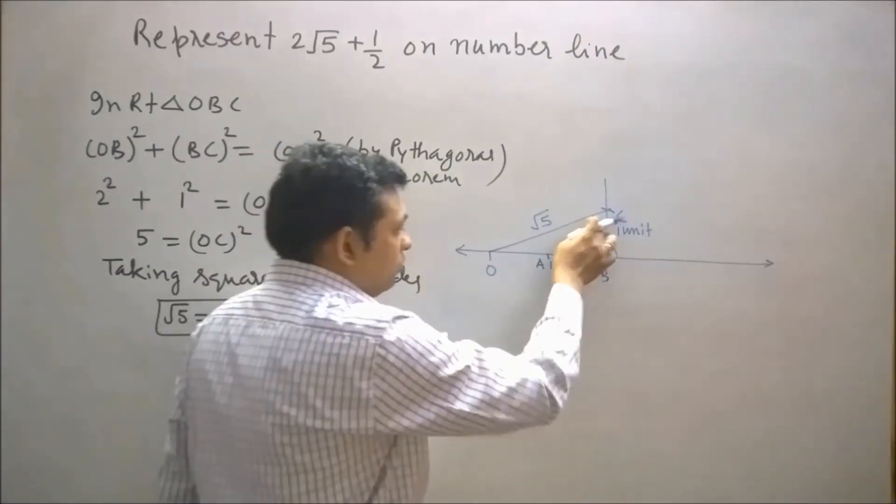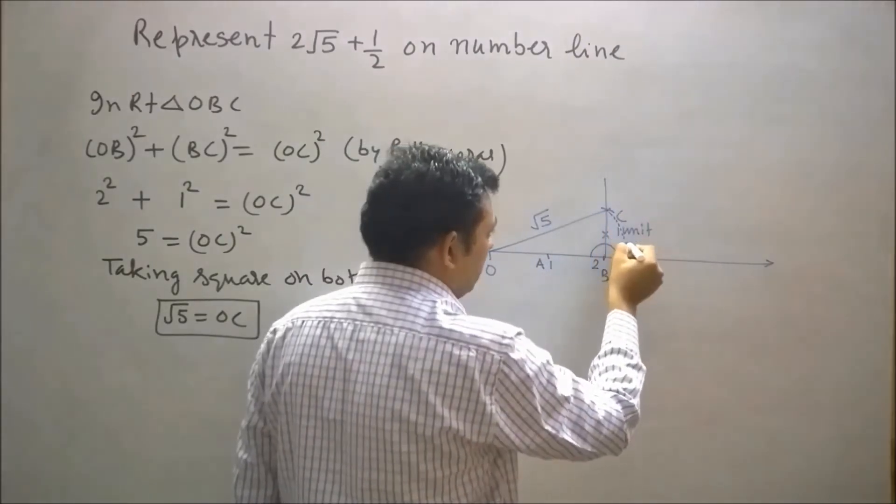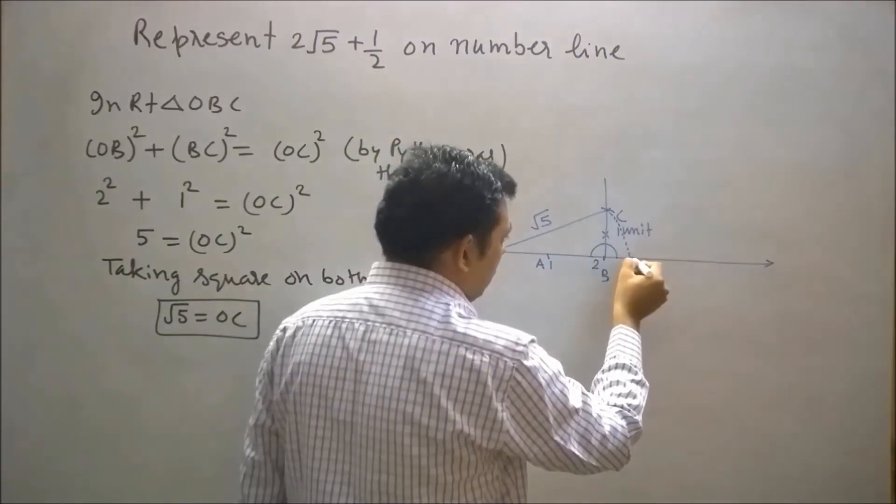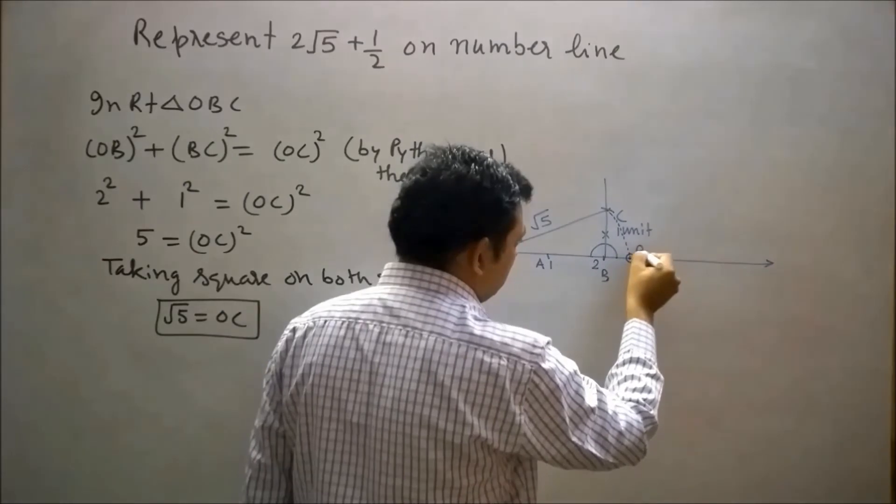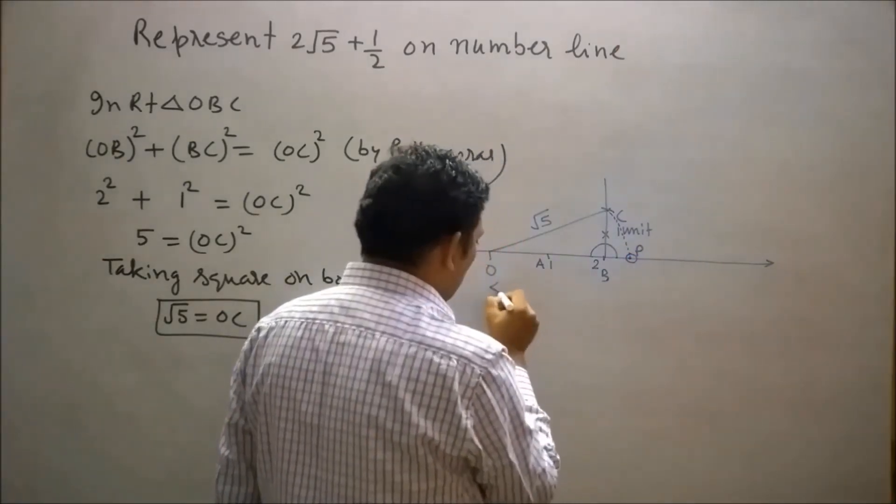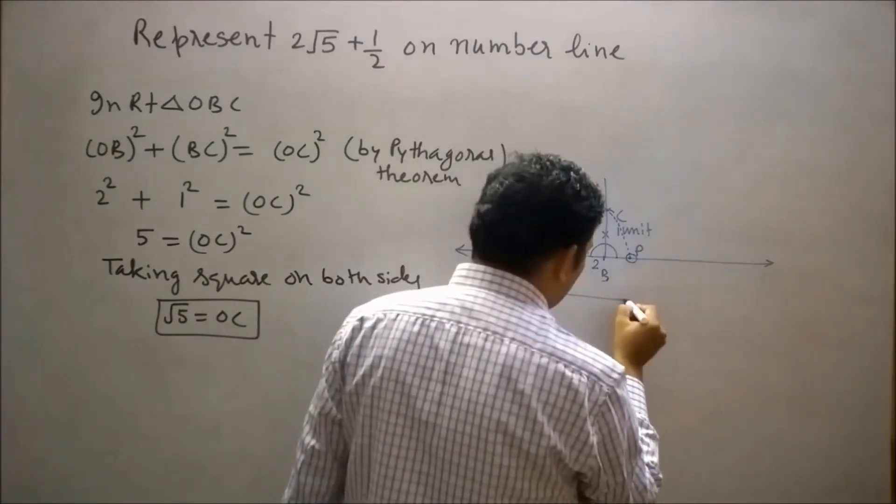Now draw an arc equal to OC from the center O. Let's say this arc will intersect the number line at point P. Therefore, OP is equal to √5.